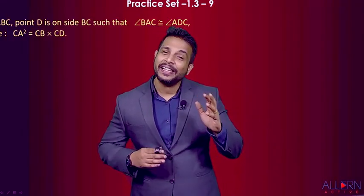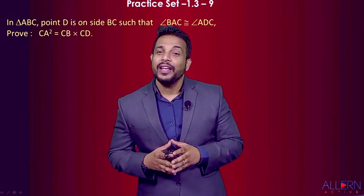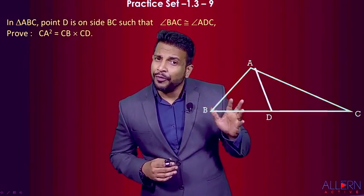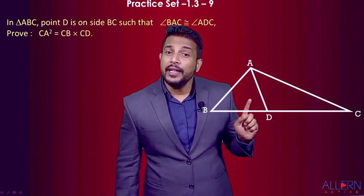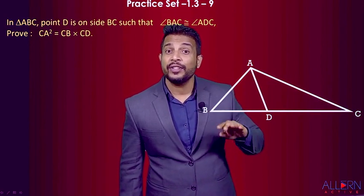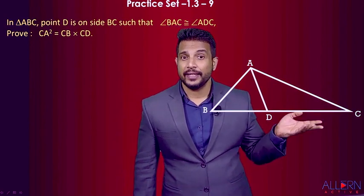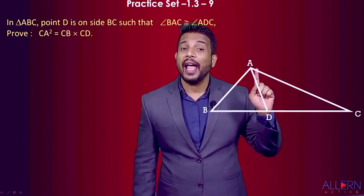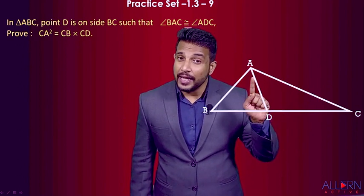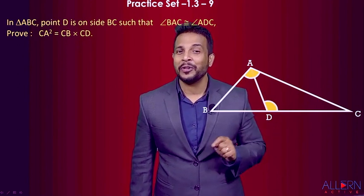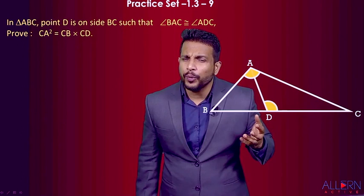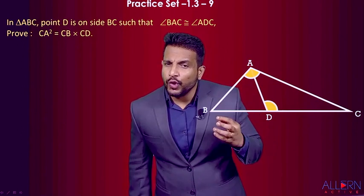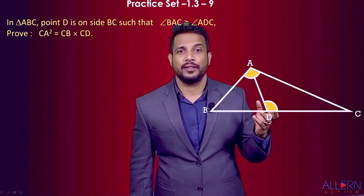Let's do a beautiful sum — this is going to be very interesting. In triangle ABC, D is a point on side BC such that angle BAC and angle ADC are both congruent. We need to prove that CA² = CB × CD.